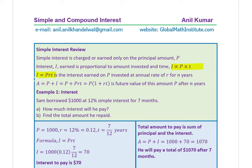So I equals P·R·T is the interest earned on P invested at annual rate R for T years. The total amount will be principal plus interest: P plus P·R·T. Taking P as a common factor gives P times (1 plus R·T). This is also called the future value of amount P — after the investment period, it grows and this becomes the future value.